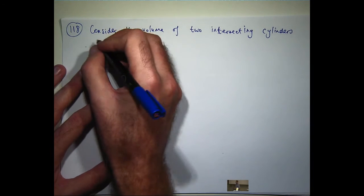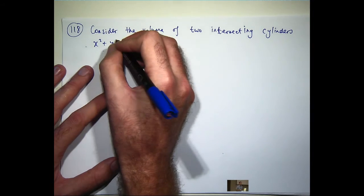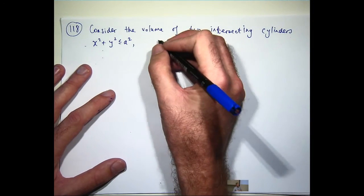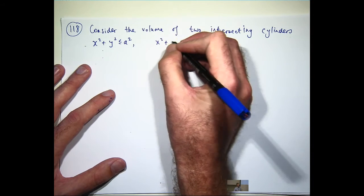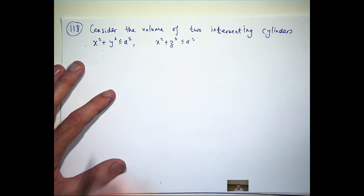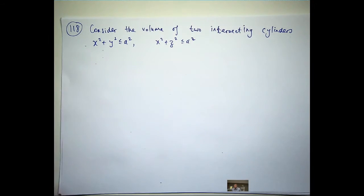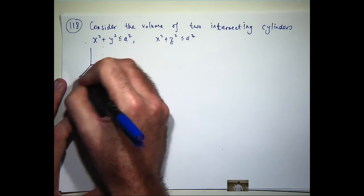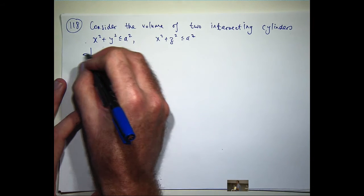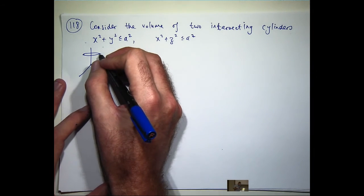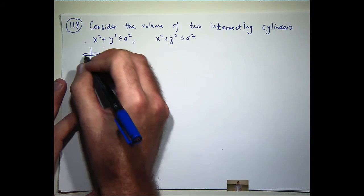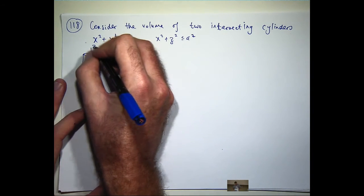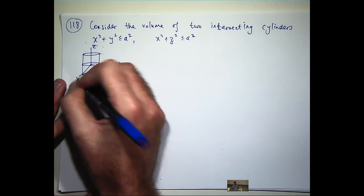Let's consider the volume of two intersecting cylinders. So we've got one wrapped around the z-axis, here a is some positive number, and one wrapped around the y-axis. I'm just going to draw them separately.